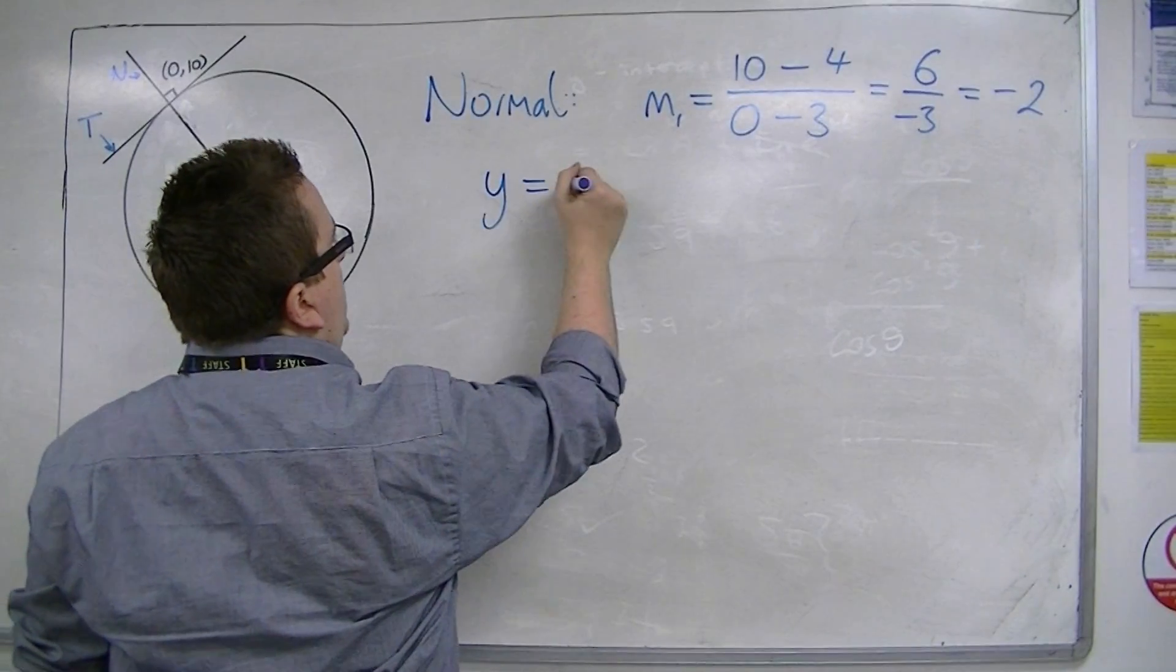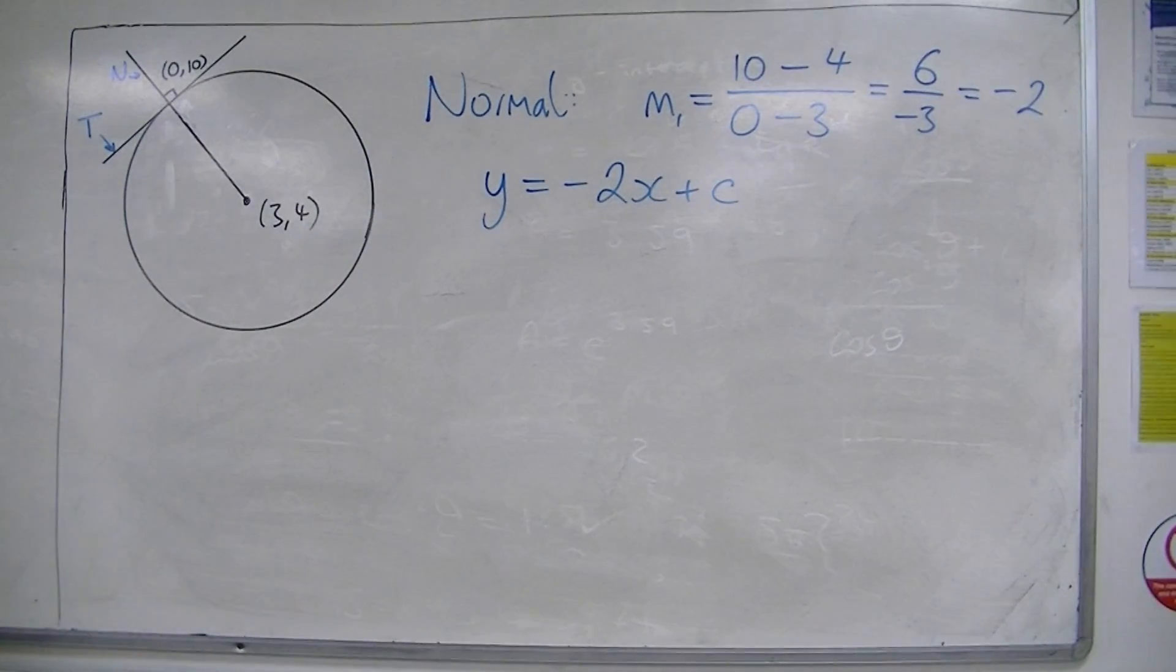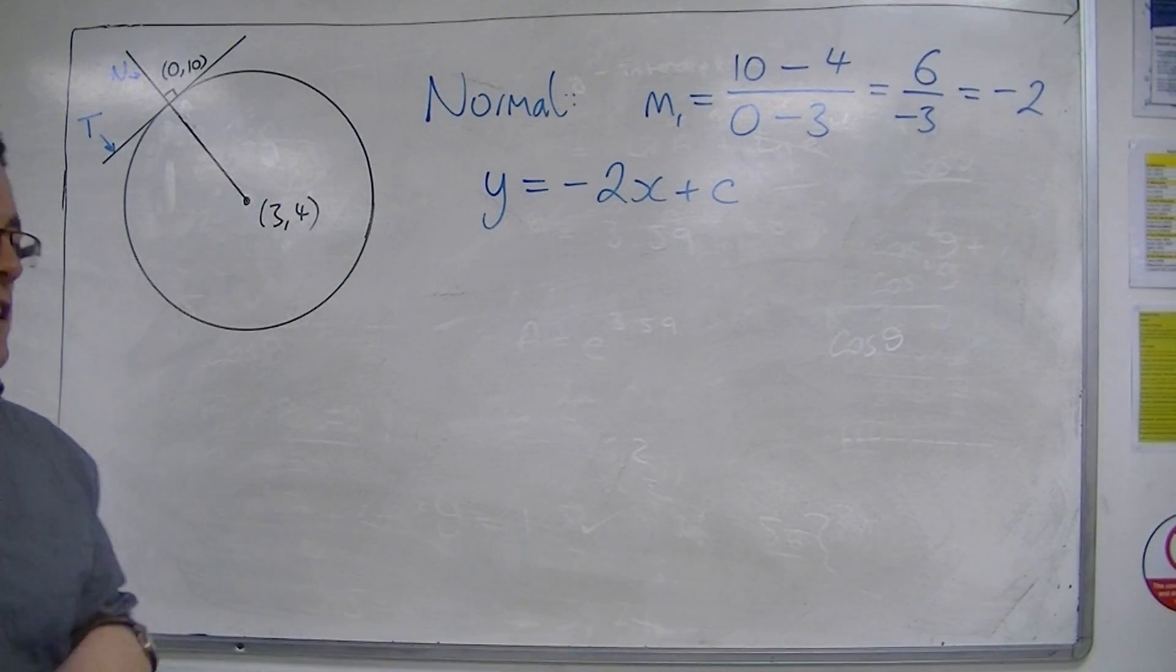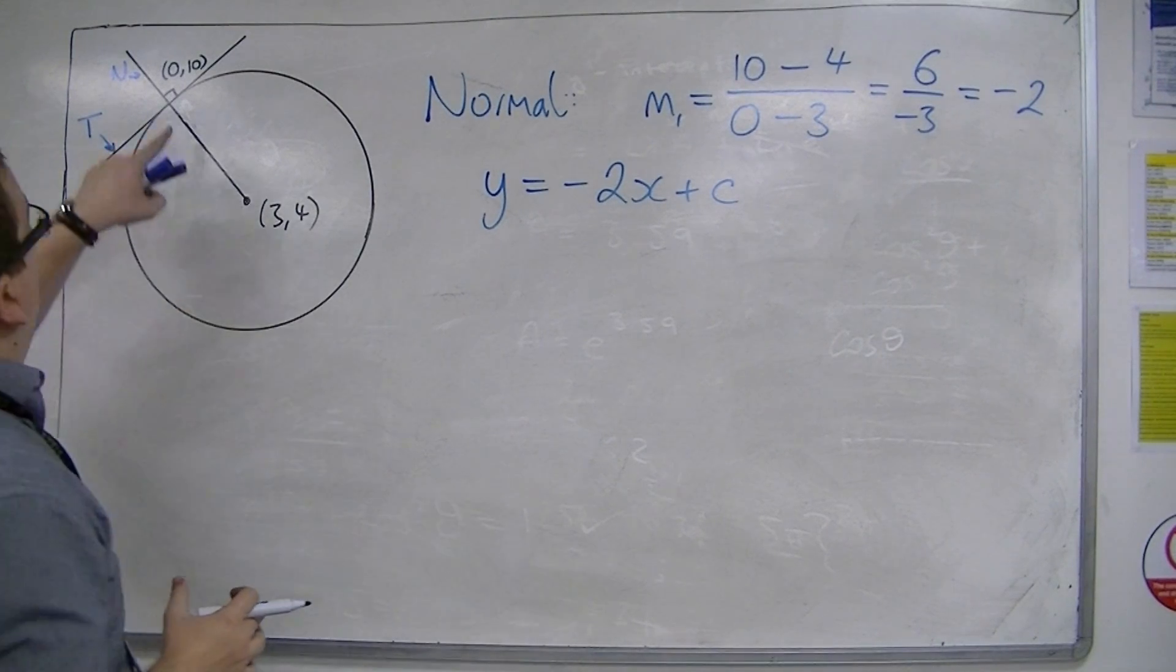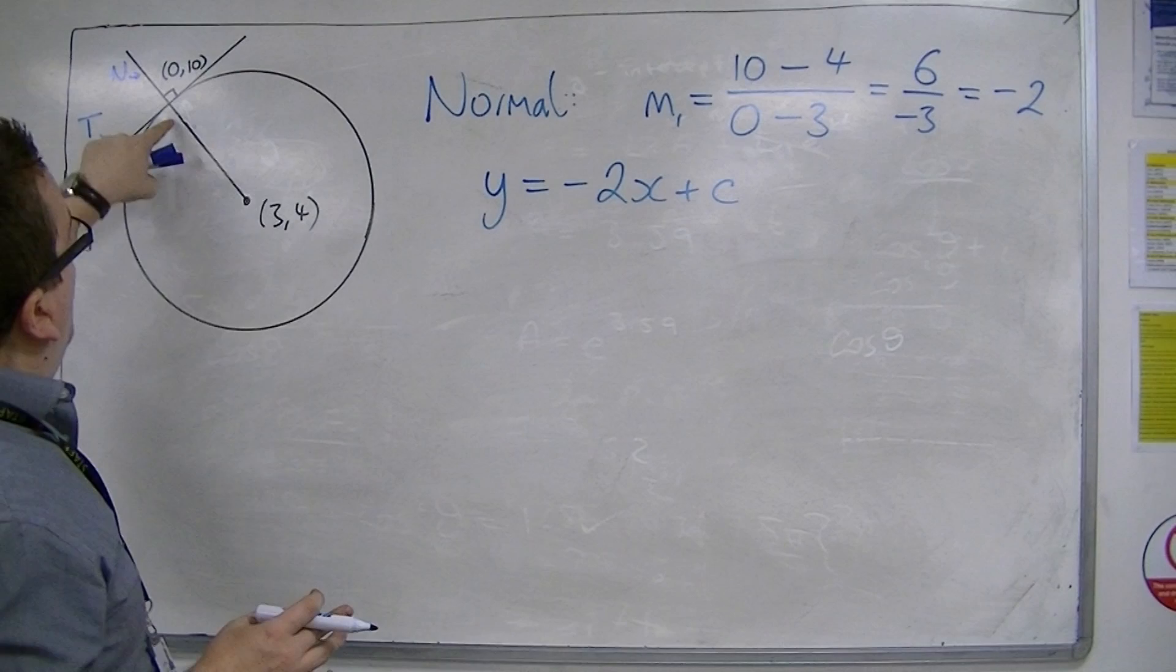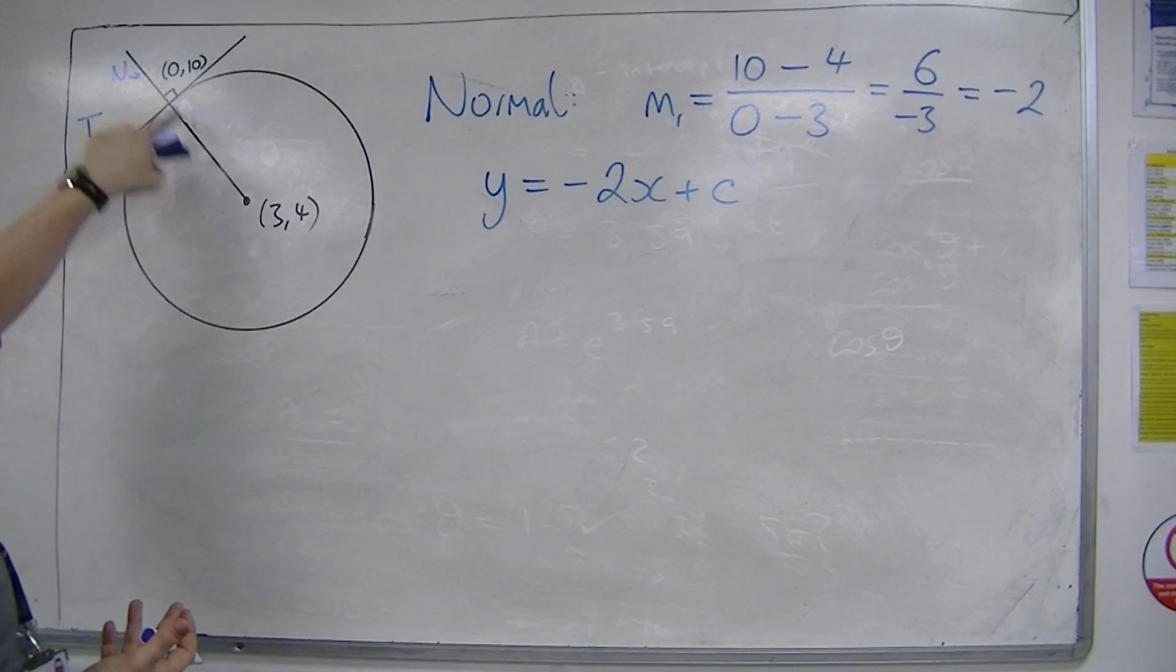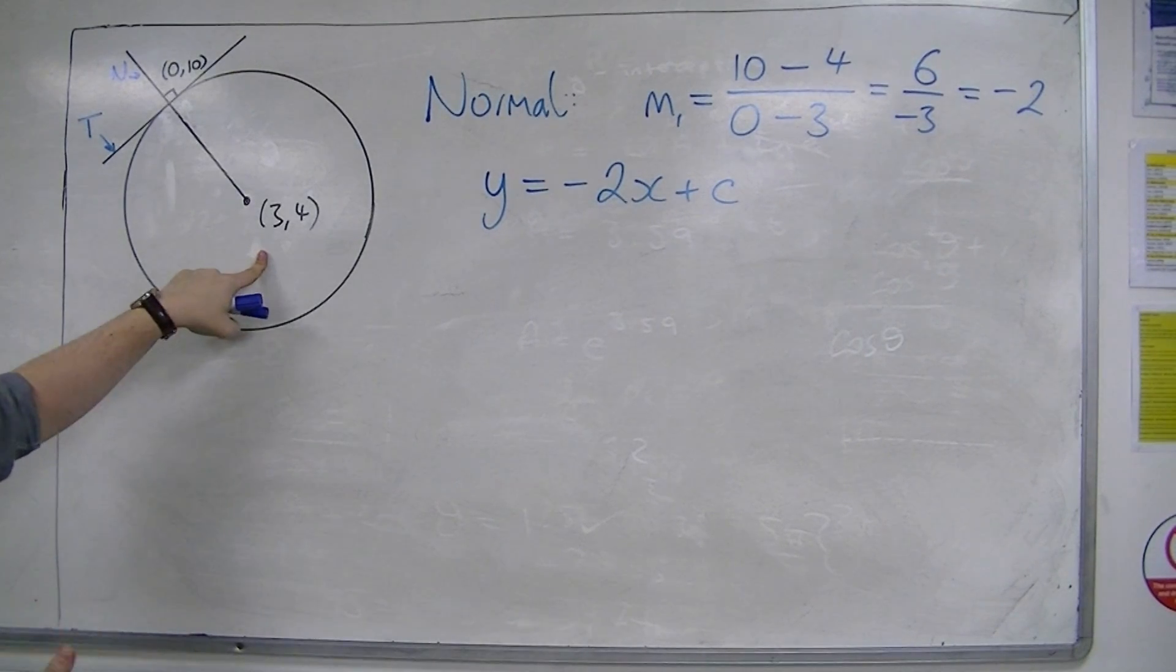So, the equation of the normal is y is equal to minus 2x plus a constant c. Now, the constant c can be found by substituting in this coordinate (0, 10). Or, you could substitute in (3, 4). It doesn't matter. Either of those two points, any point on the line will give you the value of c.